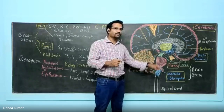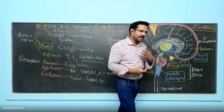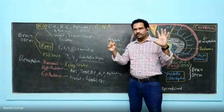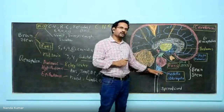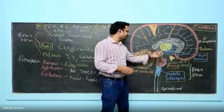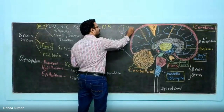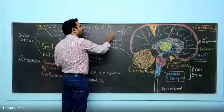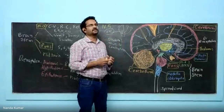The medulla oblongata is also responsible for reticular formation. Reticular formation is responsible for our alertness, awakeness, and arousal. All wakefulness and conscious thought is because of reticular formation. The ascending nerve tracts going to the top regions are known as the reticular activating system, and this reticular activating system is responsible for our alertness and awakeness.